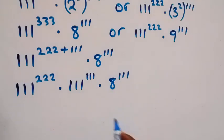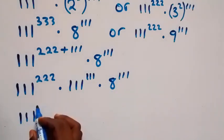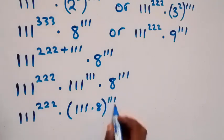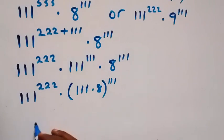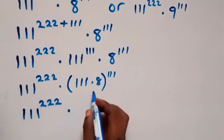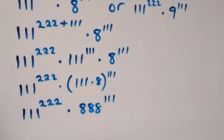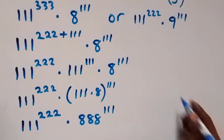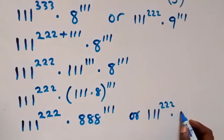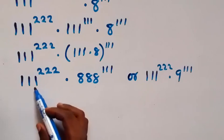The power is the same, which means we can bring the bases together and raise to power 111. That means we have 111 raised to power 222, times 111 times 8, raised to power 111. So 111 raised to power 222 will now be multiplied by 888, raised to power 111.